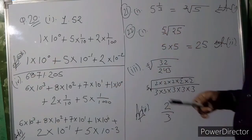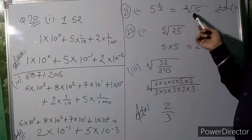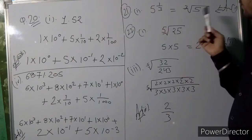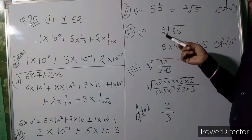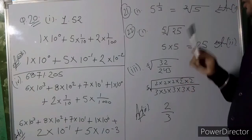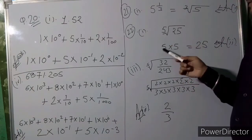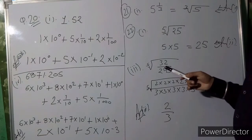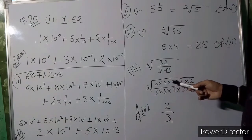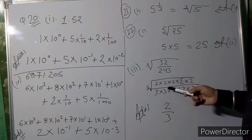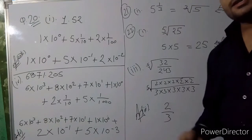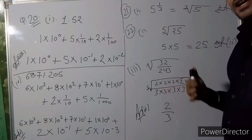In question 21, convert 5^(1/3) — that will be the cube root of 5, written as ∛5. For question 22, convert √25 × (32/243)^(1/5): the square root of 25 is 5, and 32 = 2⁵ while 243 = 3⁵, so the power 1/5 cancels the 5s giving 2/3. The answer is 5 × 2/3 — wait, √25 = 5 and (32/243)^(1/5) = 2/3, so the answer is 2 upon 3. Exercise 10.1 is now completed.